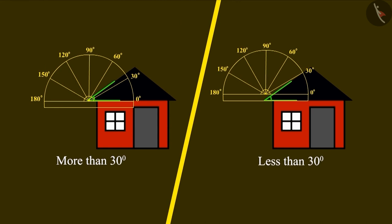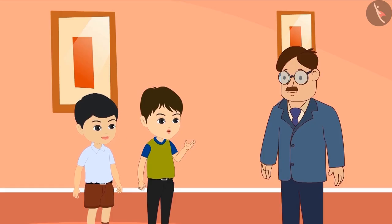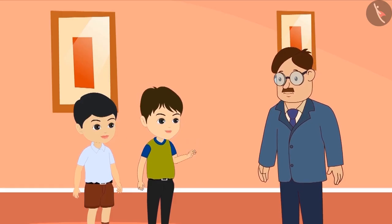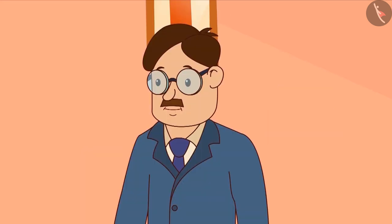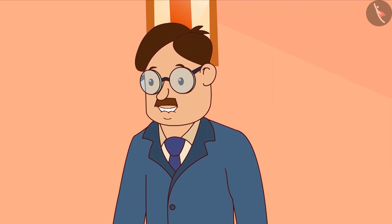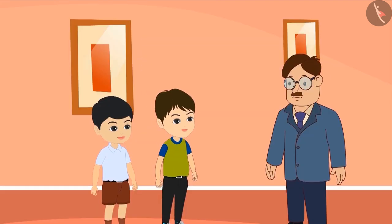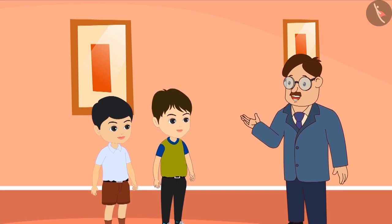Both of them went to their uncle to find out whose answer is correct. Uncle, how can there be two different measurements of the same angle? This cannot be possible Golu. Perhaps both of you may not have measured the angle correctly. Can you show me again how you measured the angle?